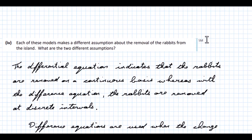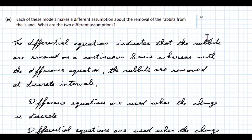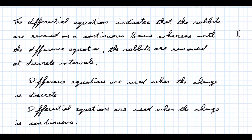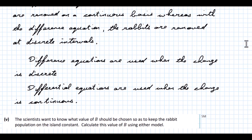Each model makes a different assumption about the removal of rabbits. The differential equation indicates that rabbits are removed on a continuous basis, whereas with the difference equation, rabbits are removed at discrete intervals. In other words, difference equations model discrete change and differential equations model continuous change.